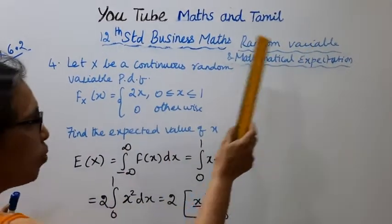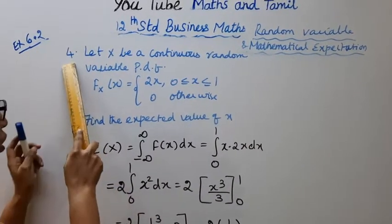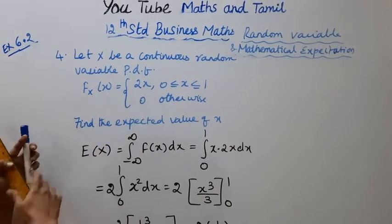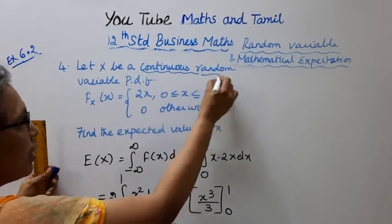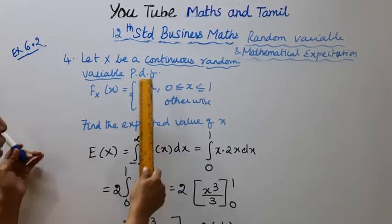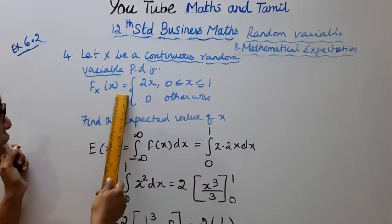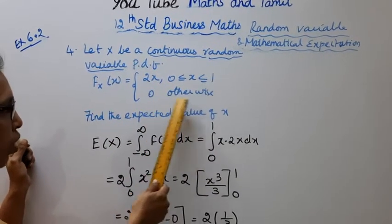12th Standard Business Maths, Random Variable and Mathematical Expectation, Exercise 6.2.4. Let x be a continuous random variable with probability density function f(x) equal to 2x, 0 less than or equal to x less than or equal to 1, 0 otherwise.